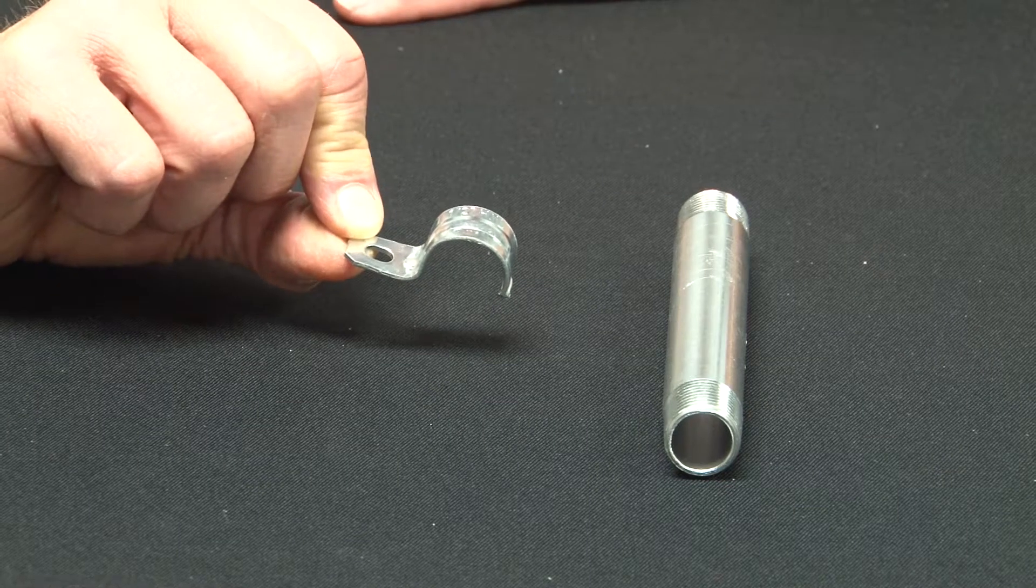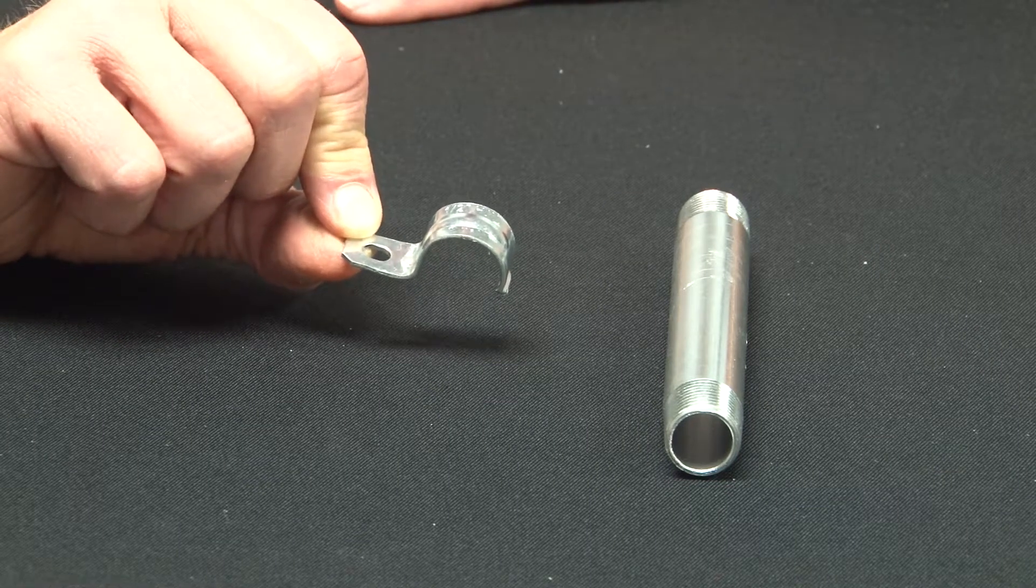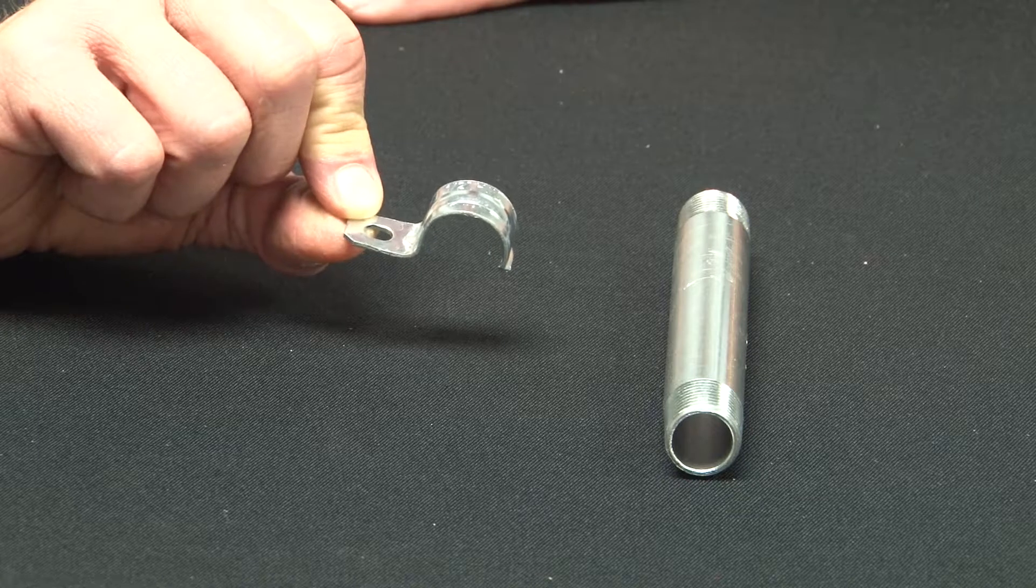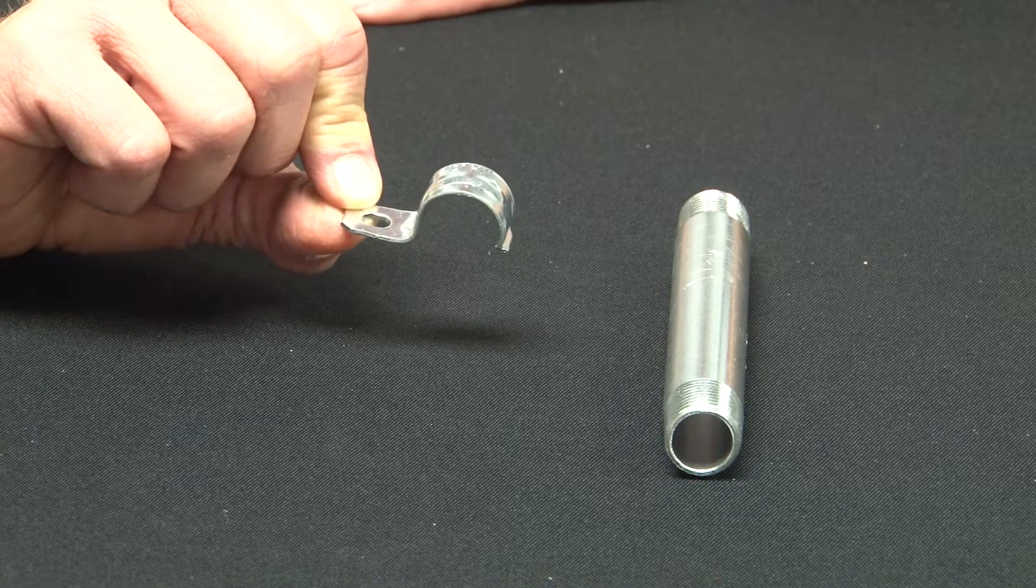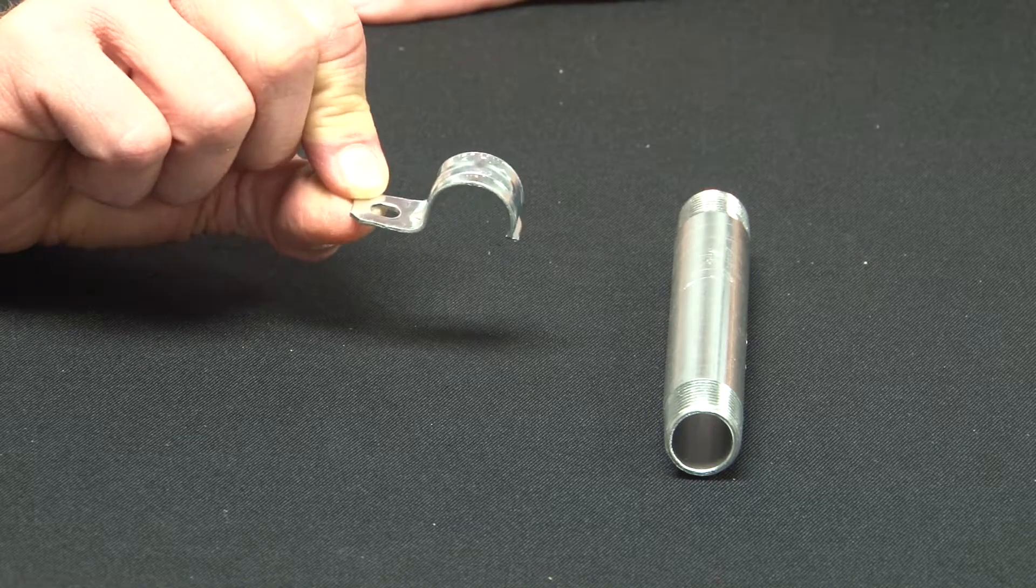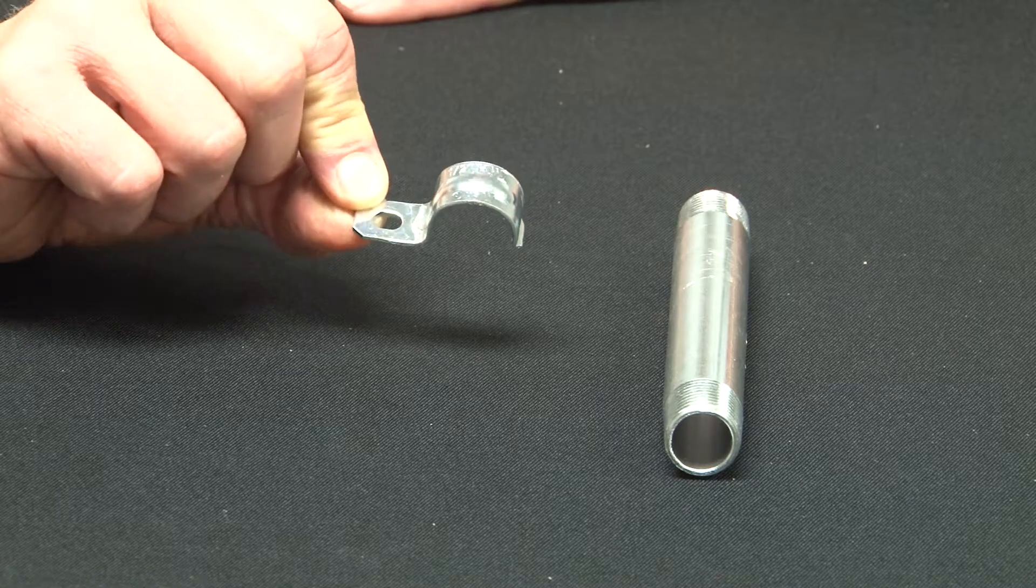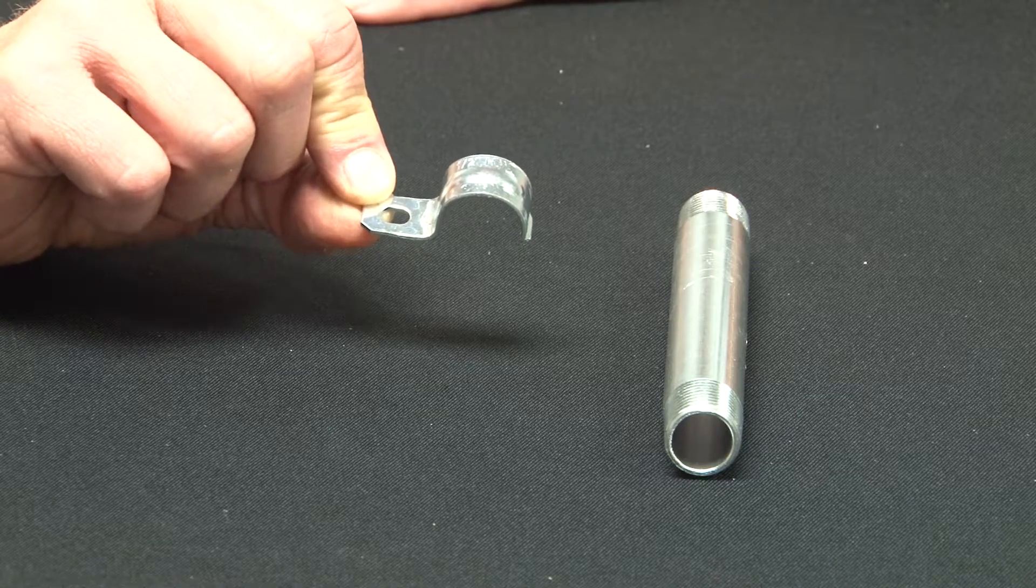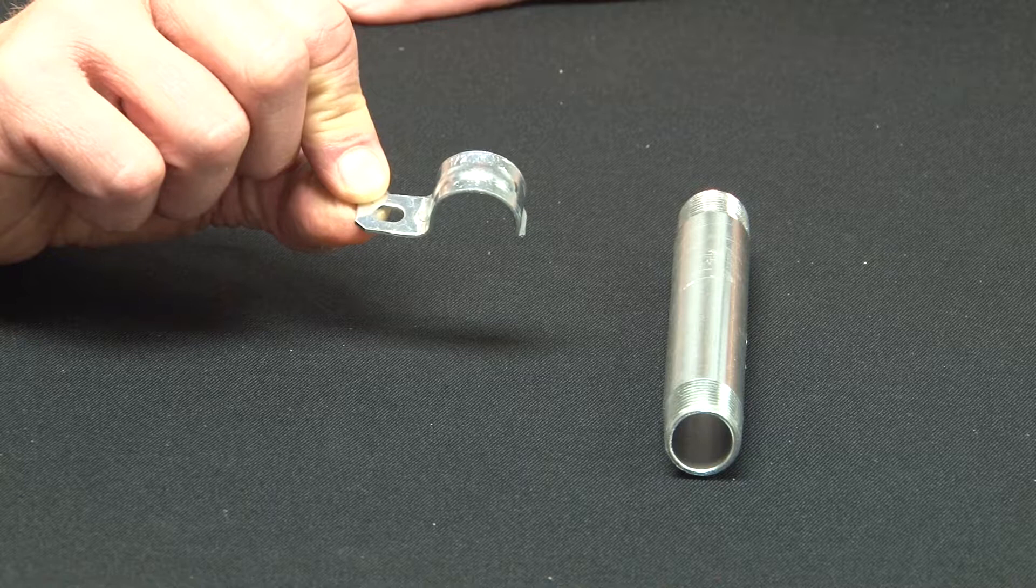For a fast and easy way to mount rigid conduit on flat surfaces, select Garvin Industries one-hole rigid mounting straps. These are made from zinc-plated steel and come in sizes from half-inch through four-inch conduit.